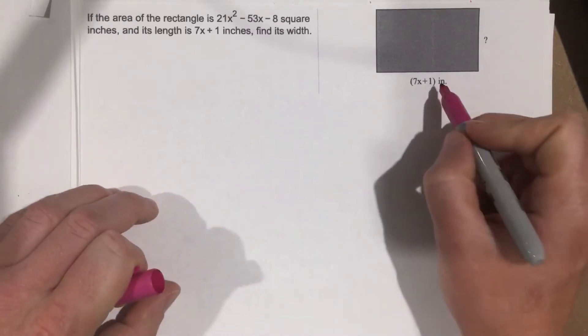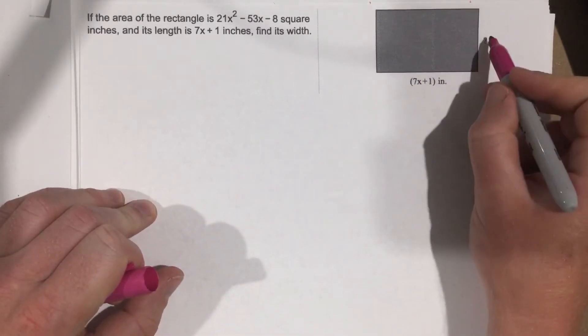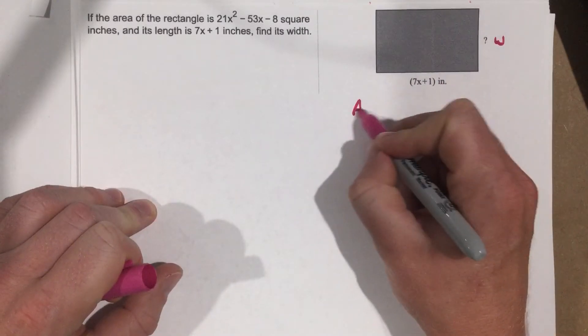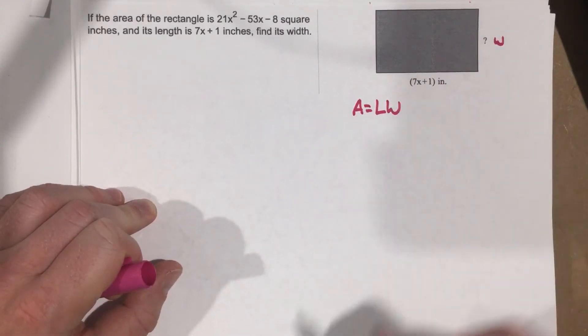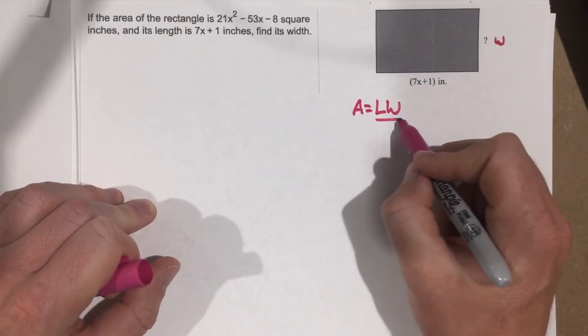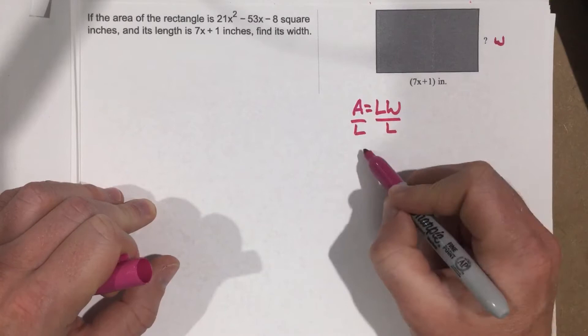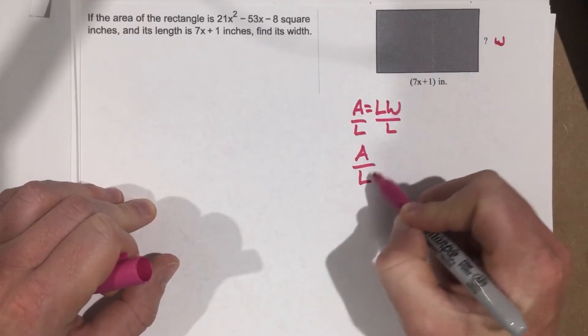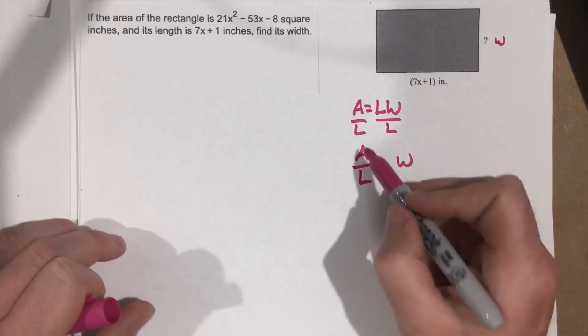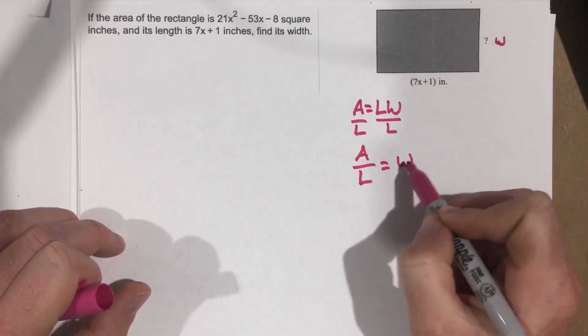Well, we know that we've got a length, we have a width here, we're going to call that w, and then the area of an object is length times width. So if I take and divide out l, so that's area over l, that gives me the width. So we know we need to take an area and divide the length to get the width.